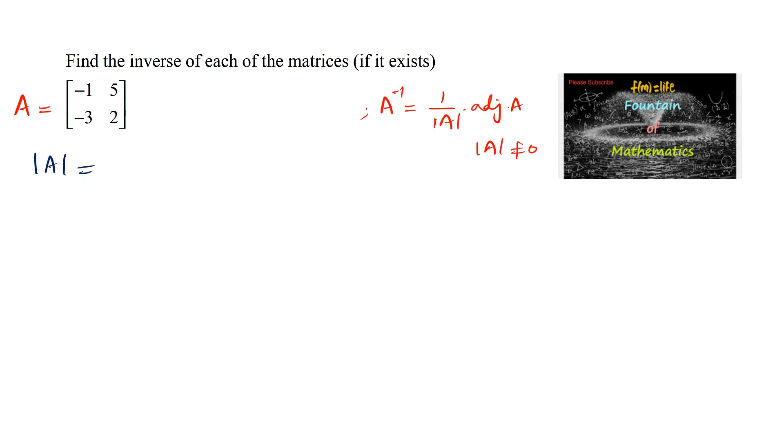For a matrix A equals A, B, C, D, the determinant of the matrix is A into D minus B into C.